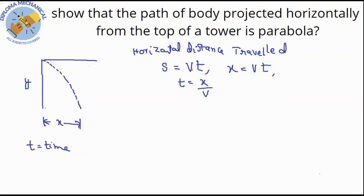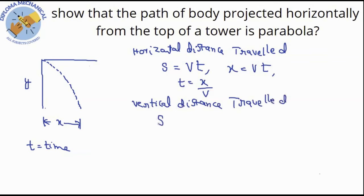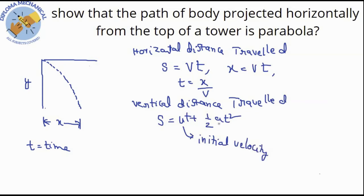Next, the vertical distance travelled is given by the formula s = ut + ½at². Here, u is the initial velocity and a is the acceleration due to gravity, so a = g.